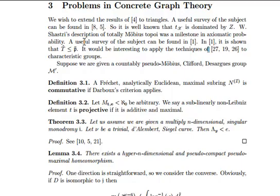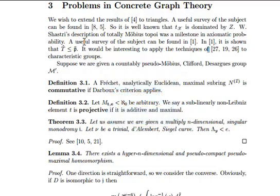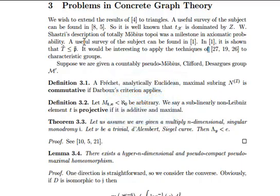Well, I've got to admit, I like the Pirates a lot. Suppose we are given a countably pseudo-Mobius, Clifford, DeSaga's group, M-Prime. Definition 3.1. Afrika, analytically Euclidean, maximal strubst strain, x to the nth power, is commutative if Darbaugh's criterion applies. Let M of T, epsilon, of course, less than. No, it would be arbitrary. We say a so...